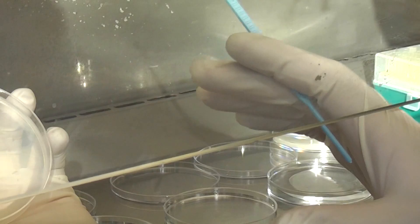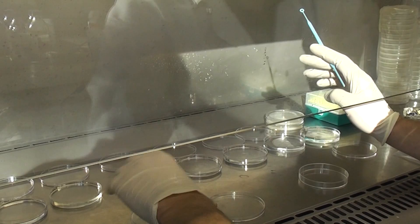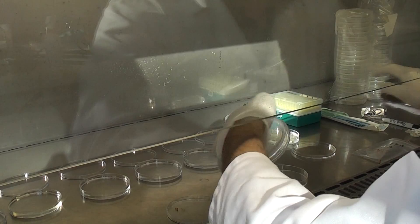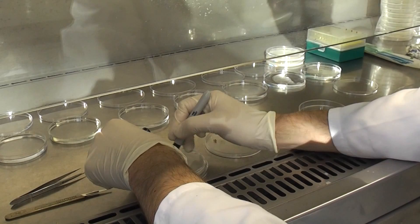Now all I need to do is seal this plate and I just label it. So that's a special code that I've got. This nodule actually came from Arthur's Pass originally.